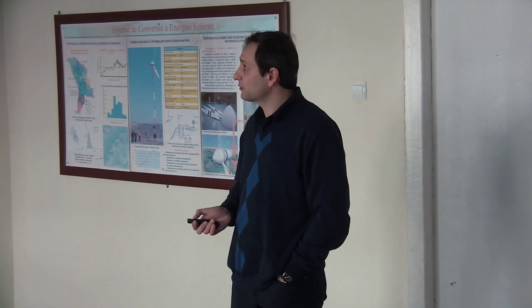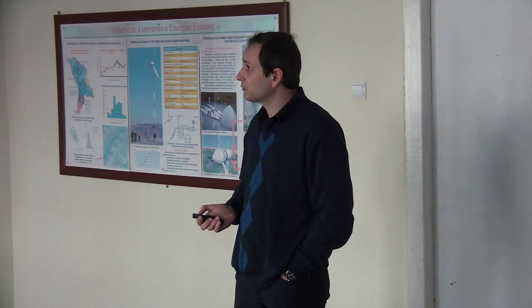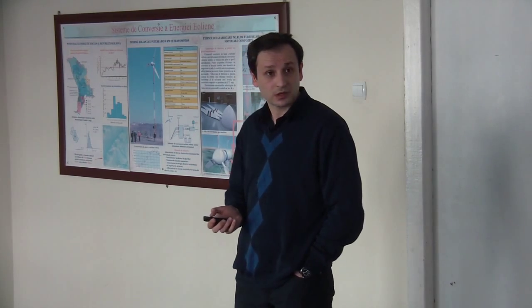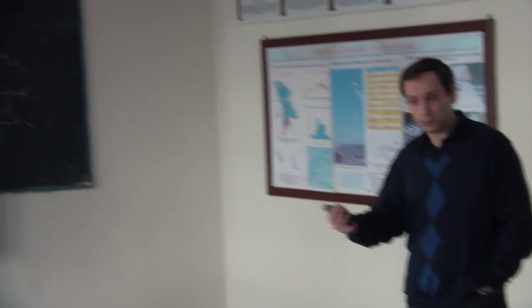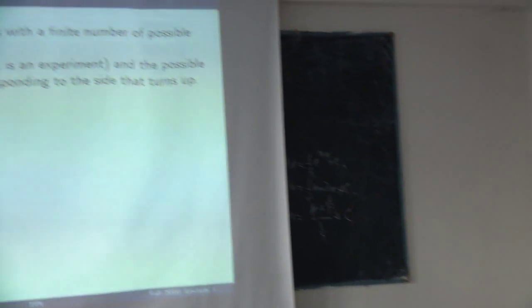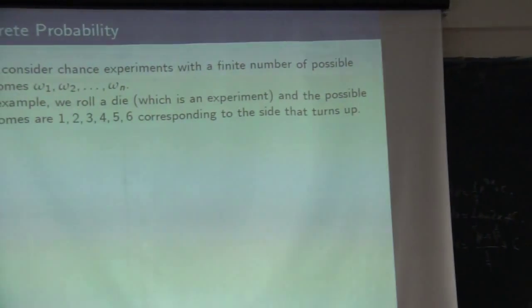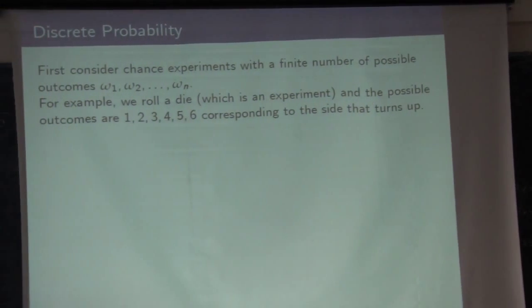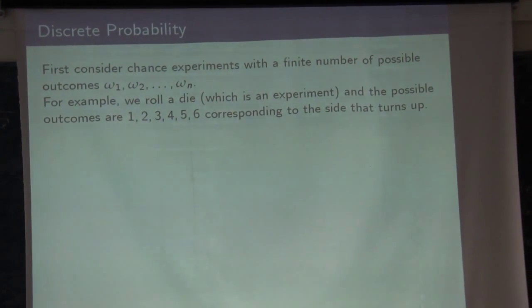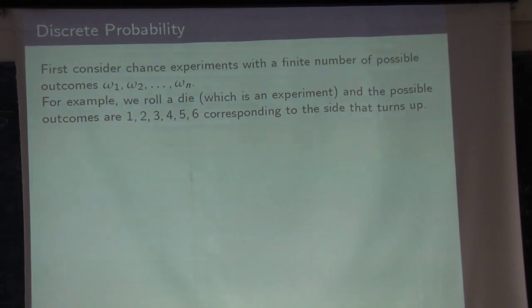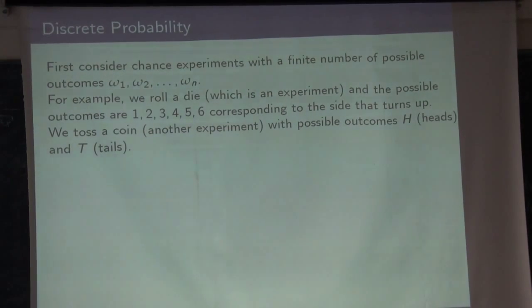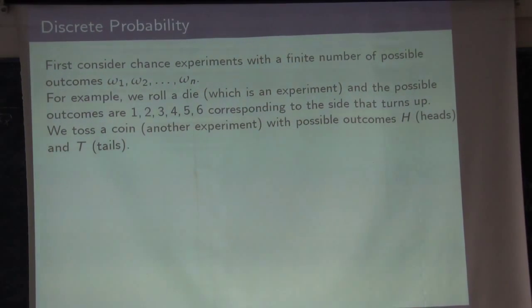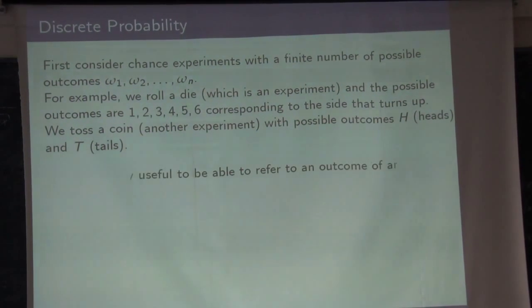First, consider a chance experiment with a finite number of possible outcomes. An outcome means the possible result: omega-1, omega-2, and so on up to omega-n. For example, rolling a die gives you six outcomes; tossing a coin gives you two outcomes.